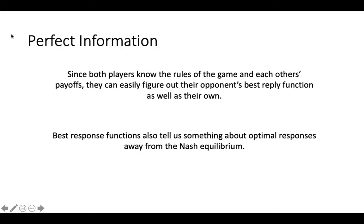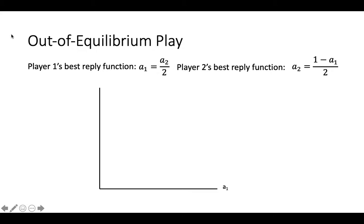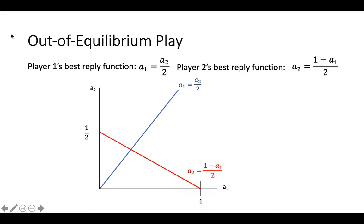If you don't like that answer, it is worth considering what the best reply functions say about play away from the equilibrium outcome. To see what happens away from the Nash equilibrium, it is helpful to graph both best reply functions. Player 1's best reply function is A1 equals A2 over 2, and Player 2's best reply function is A2 equals the quantity 1 minus A1 over 2. We create axes with Player 1's strategies on the horizontal axis and Player 2's strategies on the vertical axis. Player 1's best reply function is a line from the origin with a slope of 2, and Player 2's best reply function has a y-intercept of 1 half and a slope of negative 1 half. The Nash equilibrium occurs at the intersection of these two lines.